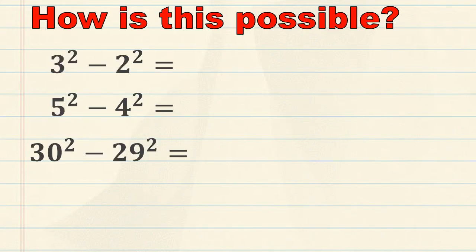So, let's take some other examples. 3 squared minus 2 squared is the same as going 3 plus 2, which equals 5. We can do this because 3 and 2 are one apart. 5 squared minus 4 squared will be 5 plus 4, which equals 9.